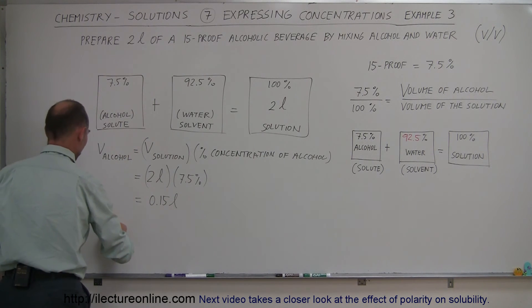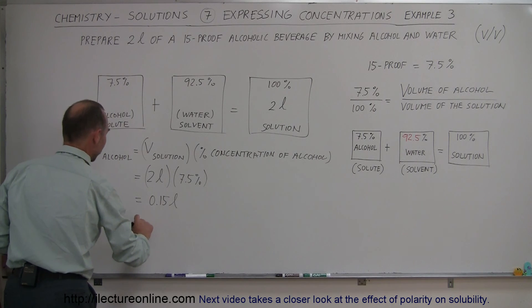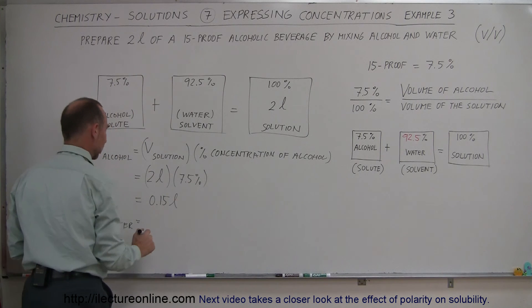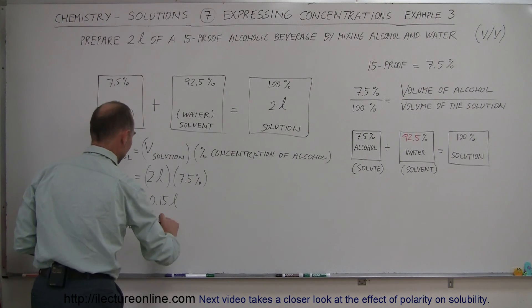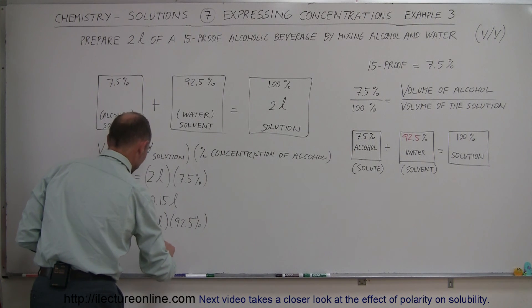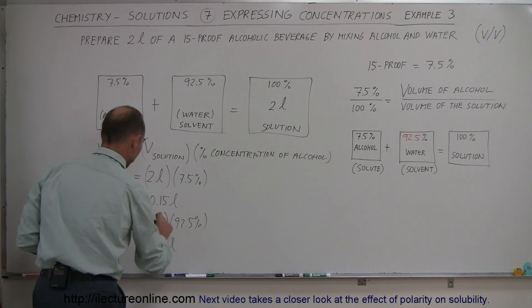For the volume of water, we do the same. It'll be the volume of the solution times the percent concentration of the water. That would be 2 liters times 92.5%, which equals 1.85 liters.